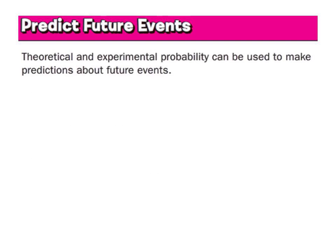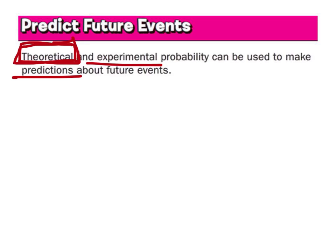Theoretical and experimental probability can both be used to predict what will happen. Theoretically, we use it to find out what will happen. If we were to do a certain activity an infinite number of times, the theoretical and experimental probability would always be the same. The more we do something, the closer we get to the theoretical probability. Whenever there is a difference in experimental probability, we can expect it to get closer to theoretical — but it's all predicted, it doesn't mean it will actually happen.